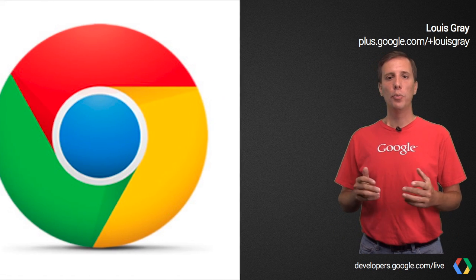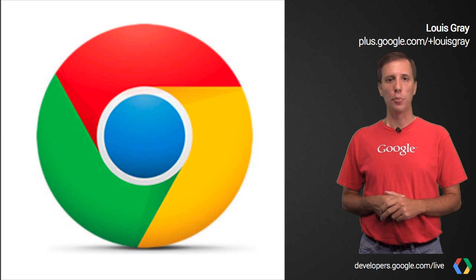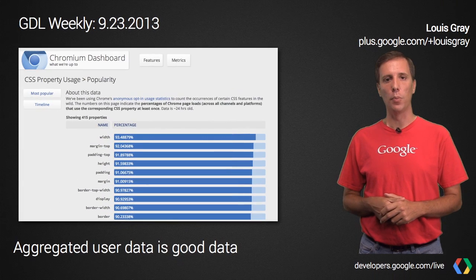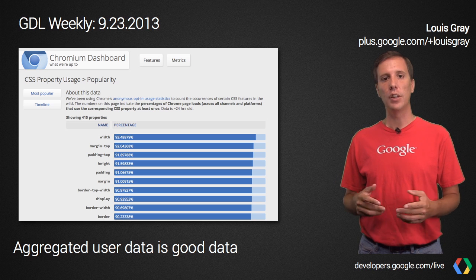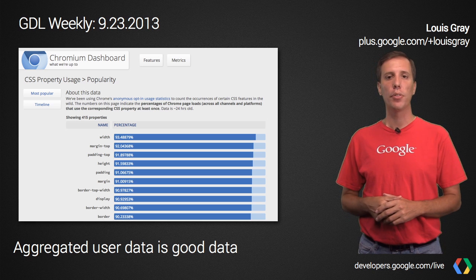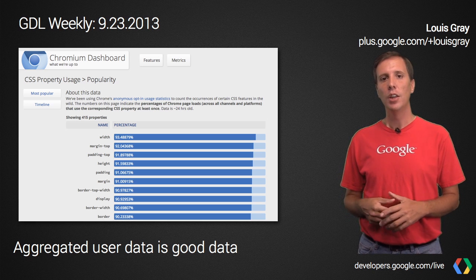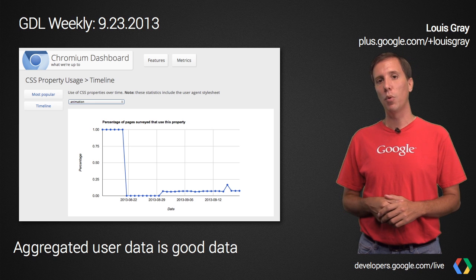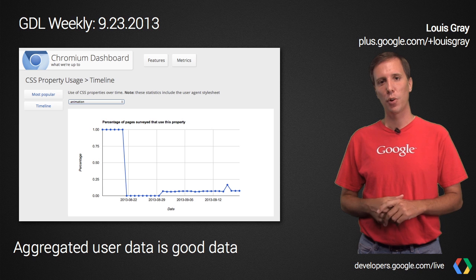The Chrome team has added to its collection of dashboards with the new CSS metrics chart. Using anonymous opt-in stats from Chrome, the new dashboard shows how many pages were visited by users using each of 435 CSS properties. You can see which properties have been used or look at a usage timeline of one particular property. Watch for more dashing dashboards for Chrome usage coming in the future.